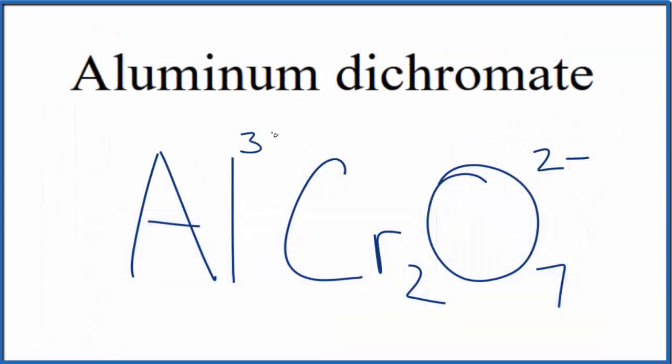So we write 3-plus for aluminum, and since aluminum dichromate is neutral, it doesn't say ion after the name, these charges here need to balance. We need a net charge of 0. We can use something called the crisscross method to make it easier. We can move the 2 down here and the 3 over here. We do need to write parentheses around our dichromate because we have 3 of these dichromate ions.